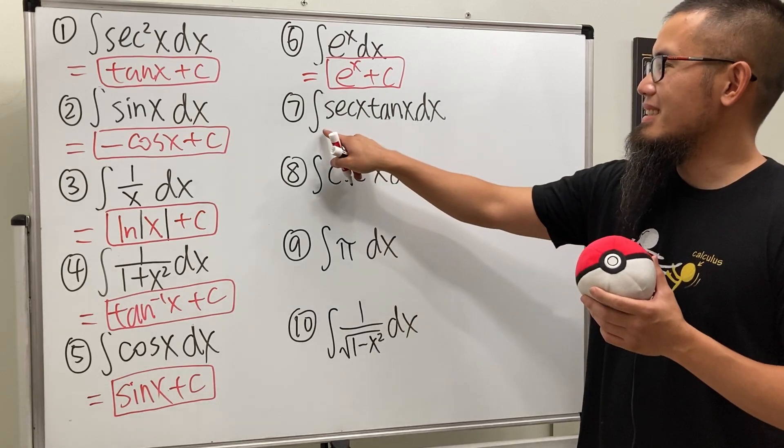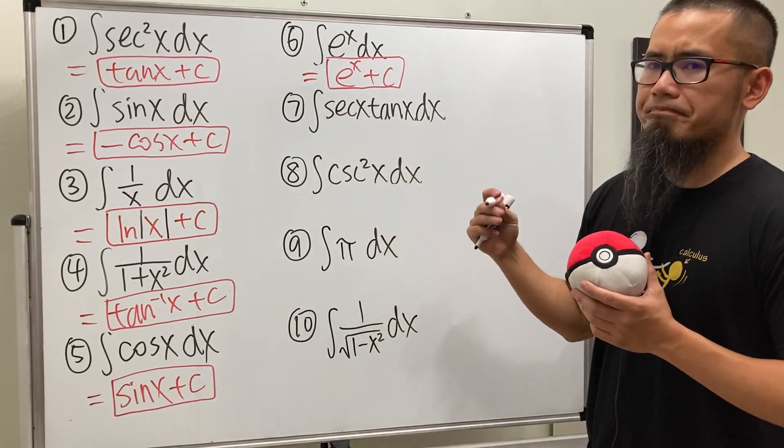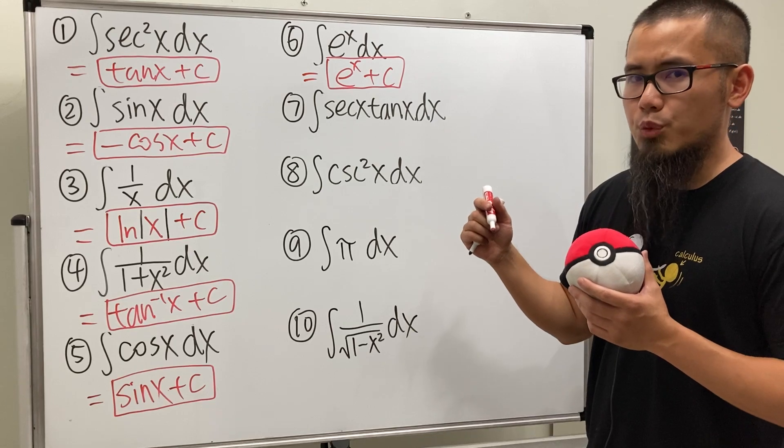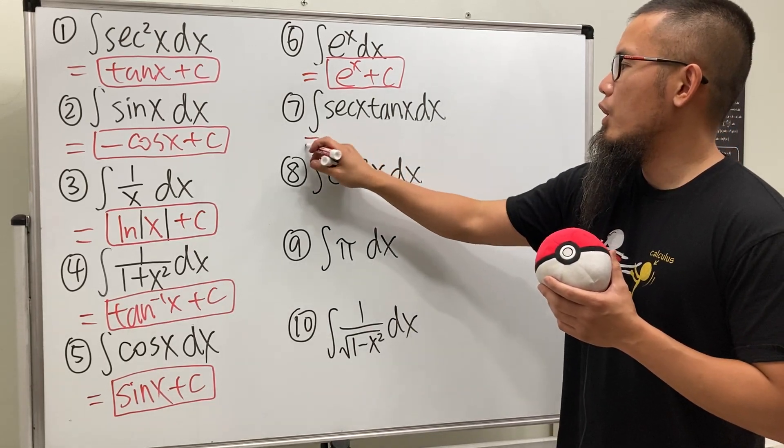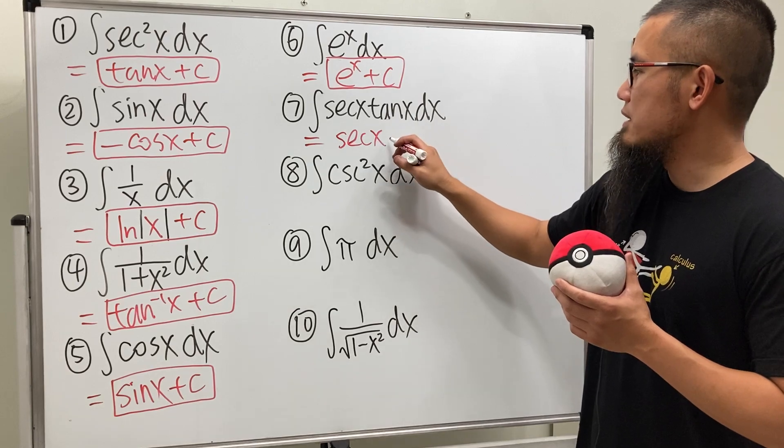All right, next. Secant x tangent x. The derivative of secant x will give us that, so just go ahead and put that down. We have secant x. That's all.